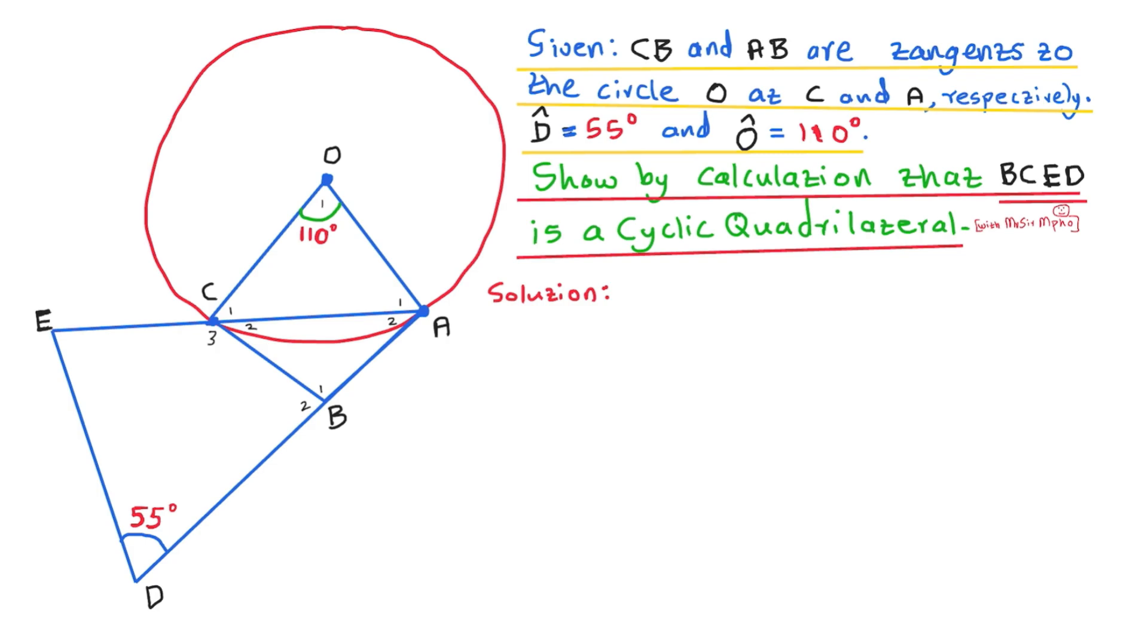I want us to do this one. They gave us CB and AB and they said that they are tangent to the circle O at C and A respectively. So let's look at them. Our tangent CB is this one here, it touches the curve at C. And our tangent AB is this one here and it touches our curve at A. And then they gave us angle D, which is 55 degrees. It's this one here. And then they also gave us the center O or O1, if I may say, which is 110 degrees. It's this one here.